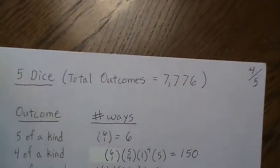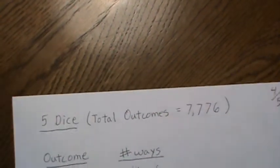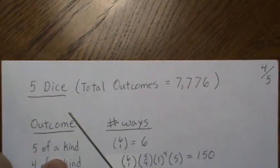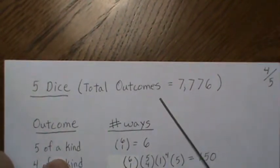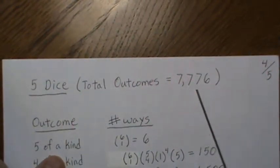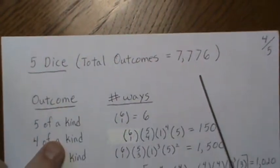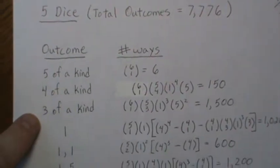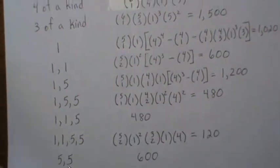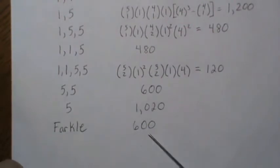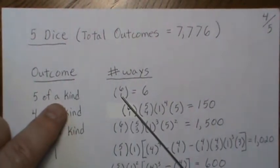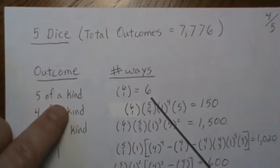Now the fun really begins. That was four dice — so next are five and six. With five dice, counting is really tough, but that's what makes it fun. So we have five dice: 6^5 total outcomes. The possible ways to score are: five of a kind, four of a kind, three of a kind, all the ways to score ones and fives without being one of those, and then a Farkle. Five of a kind: there are six numbers, pick one — they all have to match, so six ways to roll a five of a kind.